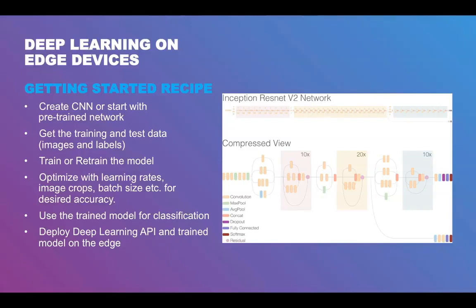One important point to keep in mind is that these deep learning libraries are bulky in nature and might not be supported on all hardware. A lot of optimization needs to happen in hardware to provide the desired performance, and a lot of innovation is happening in this space to provide optimized libraries for deep learning at the edge.